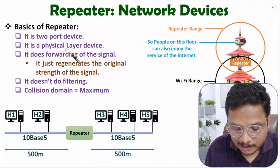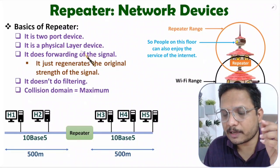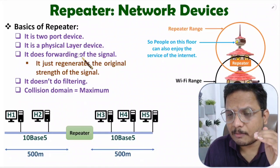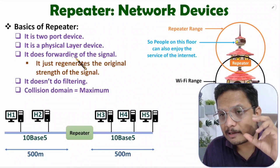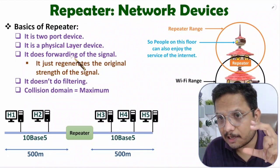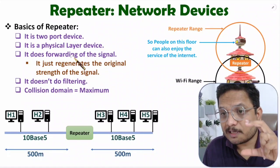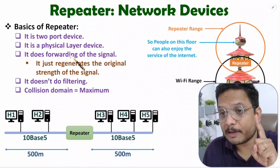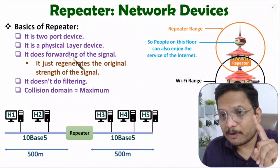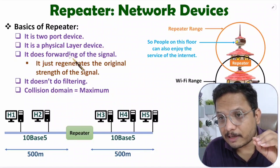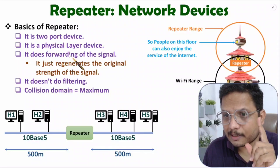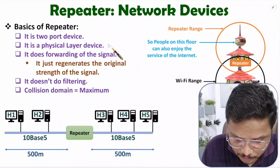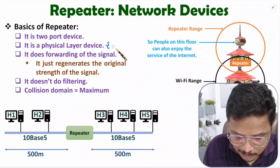The repeater is a physical layer device. In competitive examinations, I have frequently seen questions based on which layer the repeater operates at. The repeater functions at the physical layer, and you should know the physical layer is layer number one. So sometimes they may ask about layer one, layer two, or layer three devices — the repeater is a layer one device.